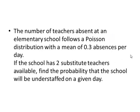Couple to go here. The number of teachers absent in an elementary school follows a Poisson distribution with a mean of .3 absences per day. Lambda is .3 per day. If the school has two substitute teachers available, find the probability that the school will be understaffed on a given day. Here the question only involves one day, so t is 1. And now we've got to figure out what to do with this 2.